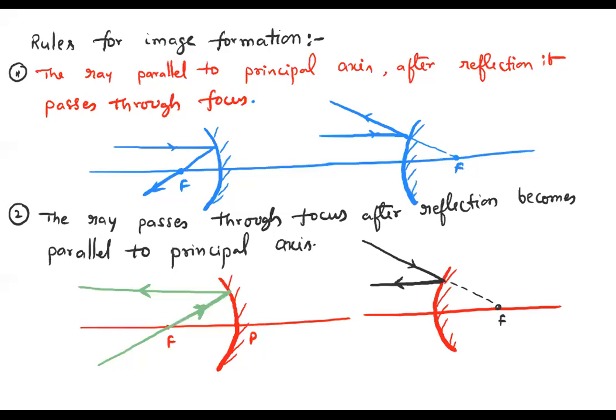Rules for image formation. These are the rules which are useful to find the location of an image. Any image is formed due to the point of intersection of a number of reflected rays. There is no limit to the number of reflected rays — so many rays will meet at that point. Then why do we need some rules?